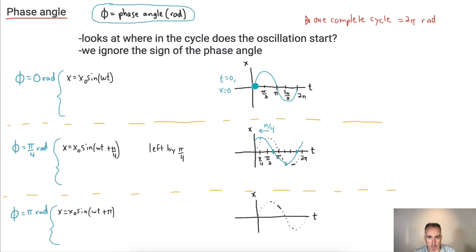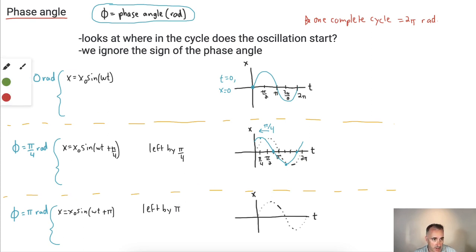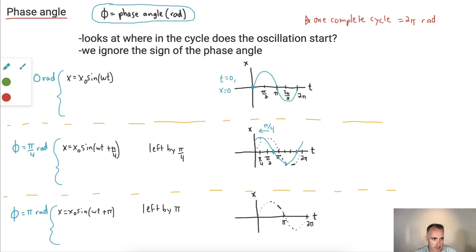A quick note: the sign of the phase angle determines whether we move left or right, but for now we'll keep it simple. What about phi equals pi radians? That means every point is shifted to the left by pi — which is half the full cycle. So the point that was at the top of the curve moves all the way over, and the whole graph ends up looking like a sine curve shifted by half a period, which actually looks like a negative sine curve.